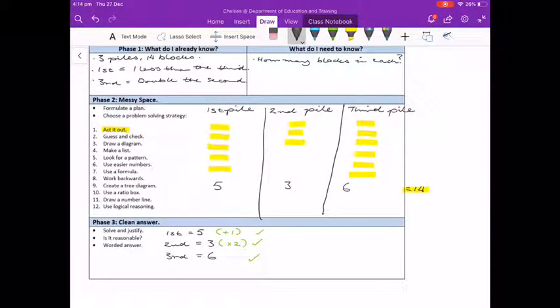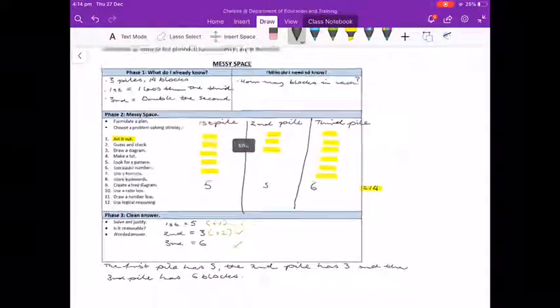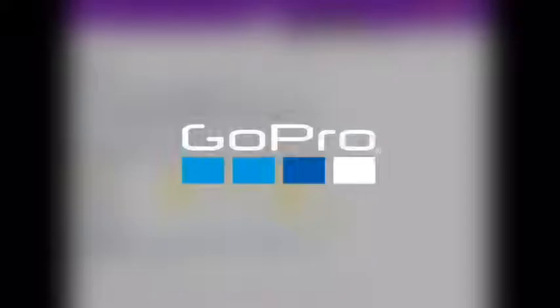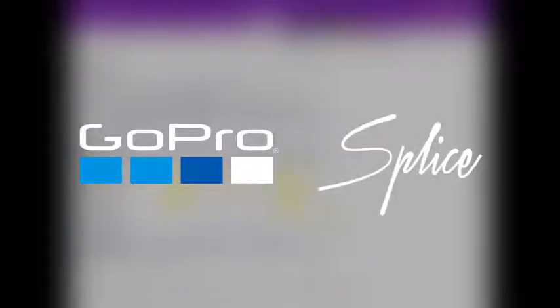So the answer is: the first pile has five, the second pile has three, and the third pile has six blocks. That is how you use the problem solving strategy, acted out, within the messy space framework.